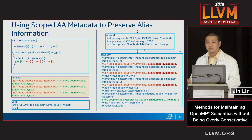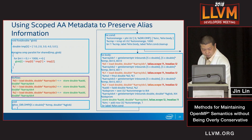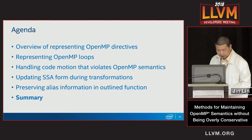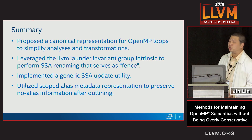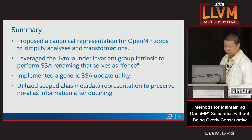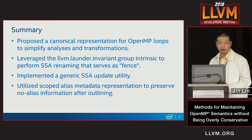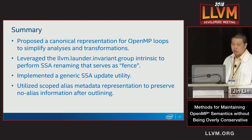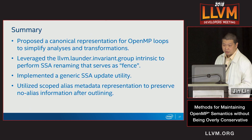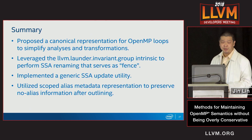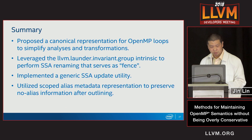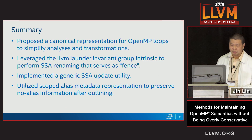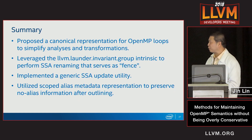Being able to preserve the alias information is one of the advantages of back-end outlining. In summary: we propose a canonical representation for the OpenMP loop to simplify analysis and transformations; we leverage the LLVM invariant group intrinsic to perform SSA renaming as a fence; we have implemented a generic SSA update utility; and we utilized scope alias metadata representation to preserve no-alias information after outlining. That's pretty much about it. Thank you.